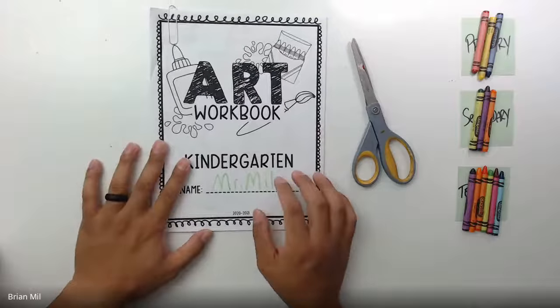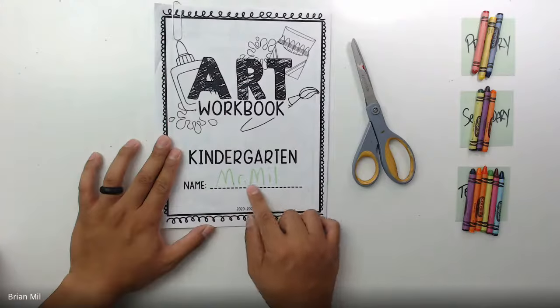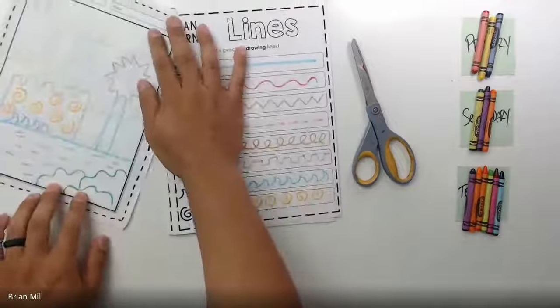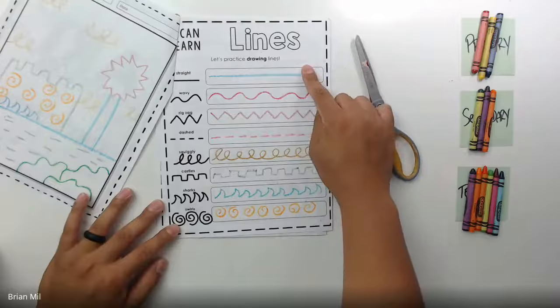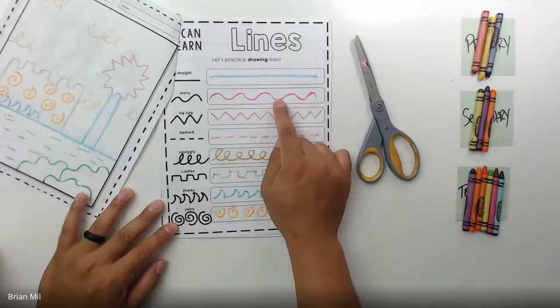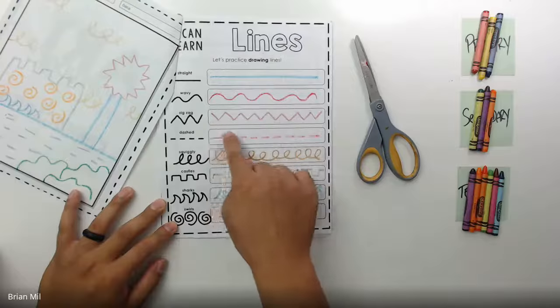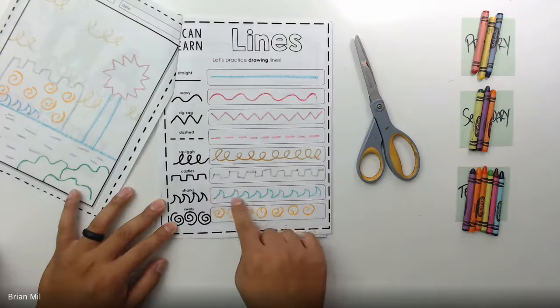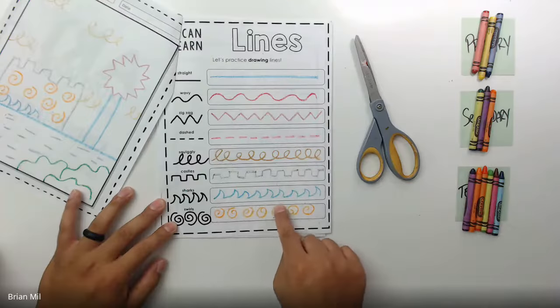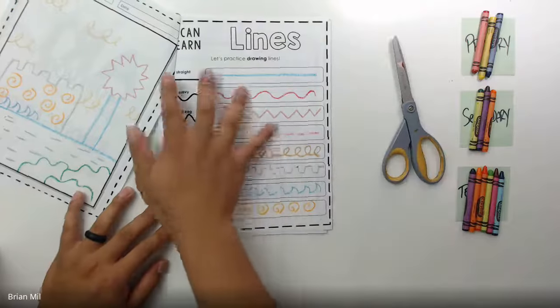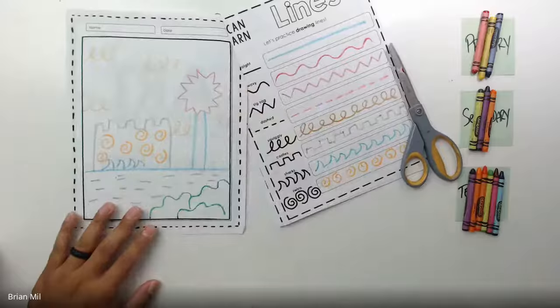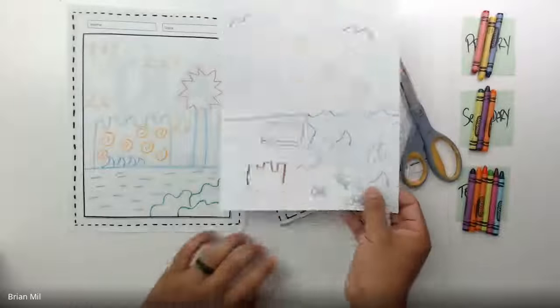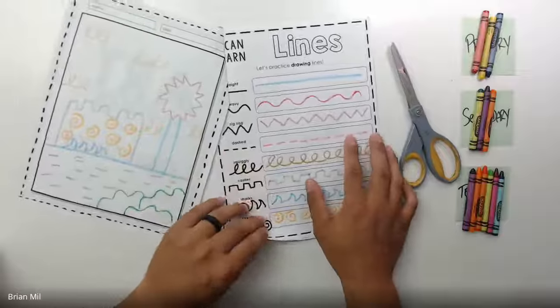Last week we talked about putting our name on the front of the workbook. Once we open it up, you can follow along with me. We talked about lines: straight lines, wavy lines, zigzag lines, dashed lines, squiggly lines, castle lines, shark lines, and we even talked about swirls. Then we made a picture based on all those lines. Some people did this kind of theme, some made a beach, and it was a really fun project.